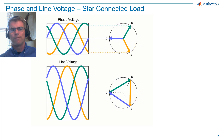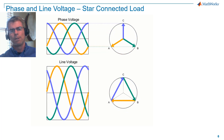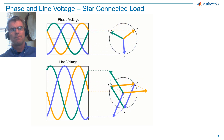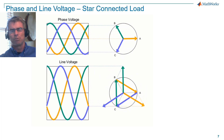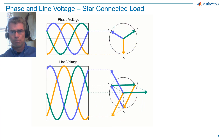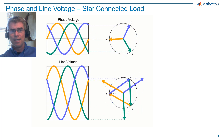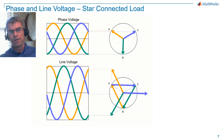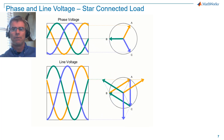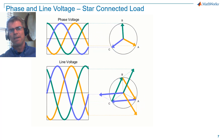For the purpose of waveform measurement, we need to bring the tails of the line voltage vectors to a common reference. So what we do is we slide vector CA so that it is referenced to the origin. We slide vector AB so that it's referenced to the origin. And finally, slide vector BC so that it too is referenced to the origin. You can now see that the vectors are tracking the instantaneous values. Note also that the line vectors are 30 degrees ahead of the phase vectors.